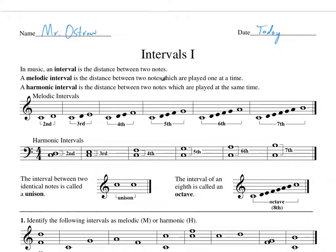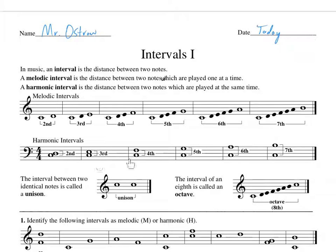So we have different examples including a second, a third, fourth, fifth, sixth, and seventh. If we went eight notes, we'd call it the octave. Harmonic intervals we call them the same thing, but they are stacked on top of each other in this case. So we would say that is a harmonic third.